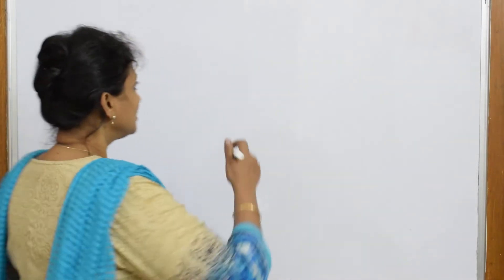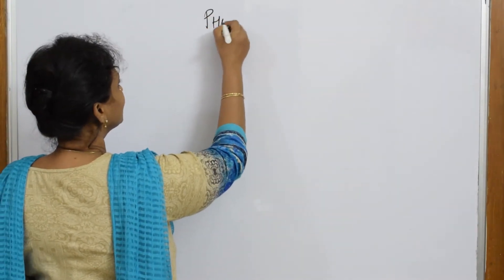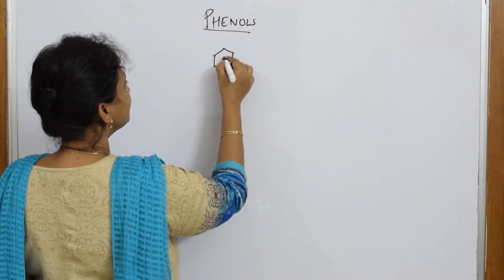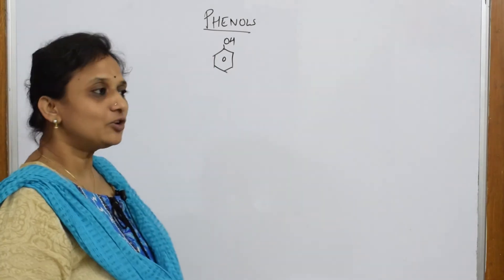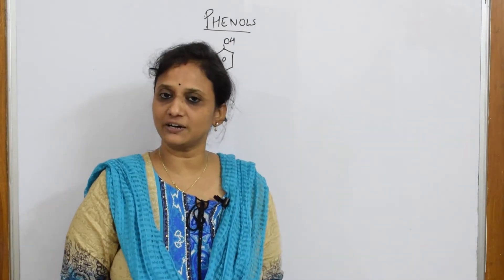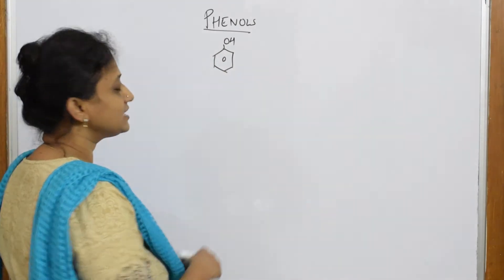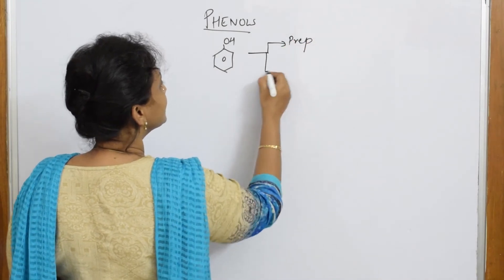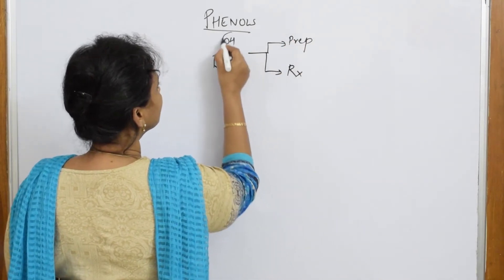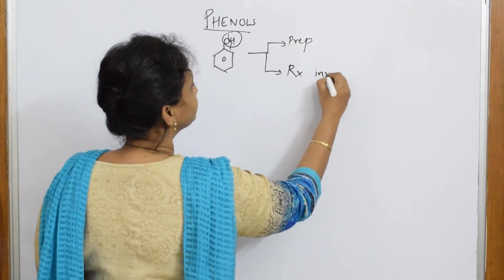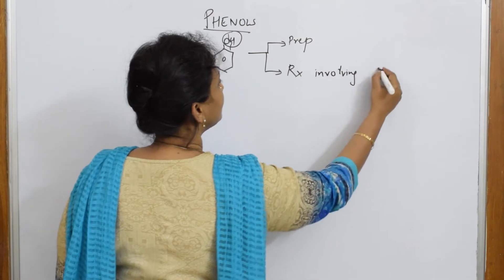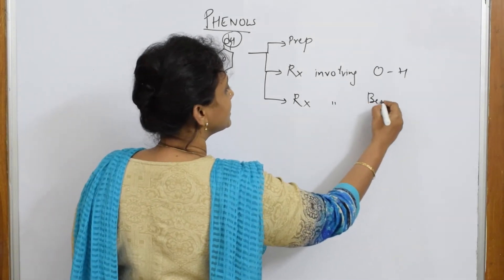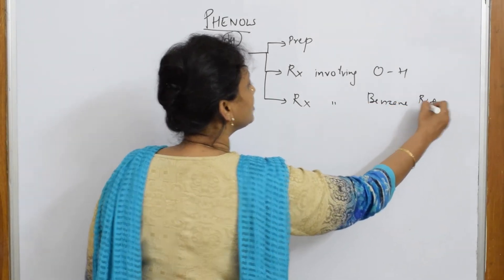Let us start with the phenols chapter. Phenols are represented by the aromatic benzene ring with an OH group. In phenols, you have preparations and chemical properties. Under the preparations of phenols, you will study reactions involving the cleavage of the O–H bond, and you will also study reactions involving only the benzene ring.